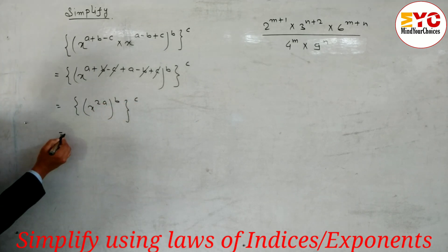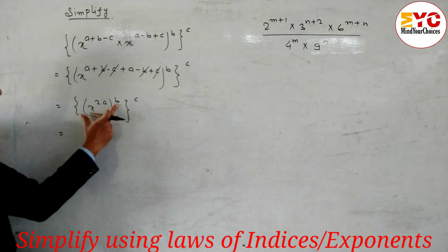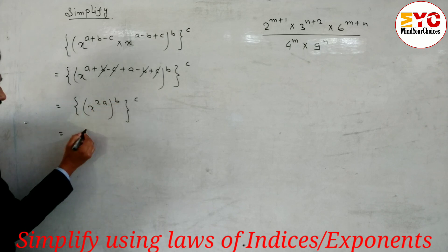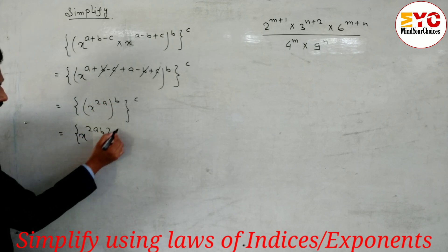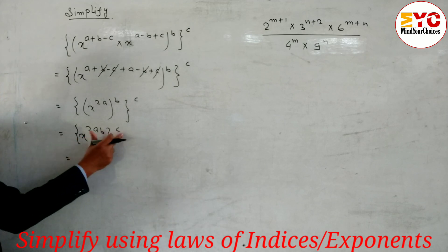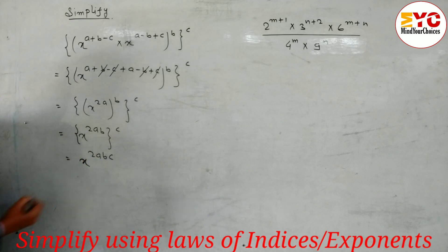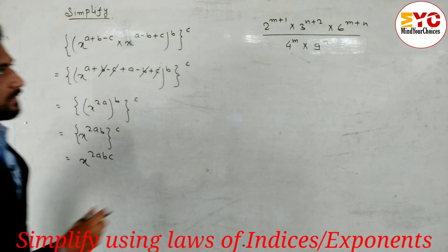We can write 2a, and the whole power is b, so we write power b, and the whole power is c. Now using the power rule — power of a power — we multiply, so we get x^(2a × b) = x^(2ab), and whole power c. Again using the power rule we multiply, so x^(2abc) is the answer.